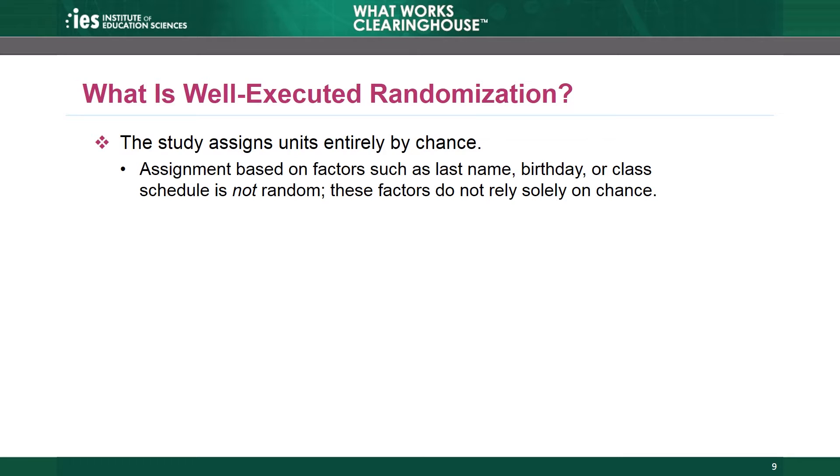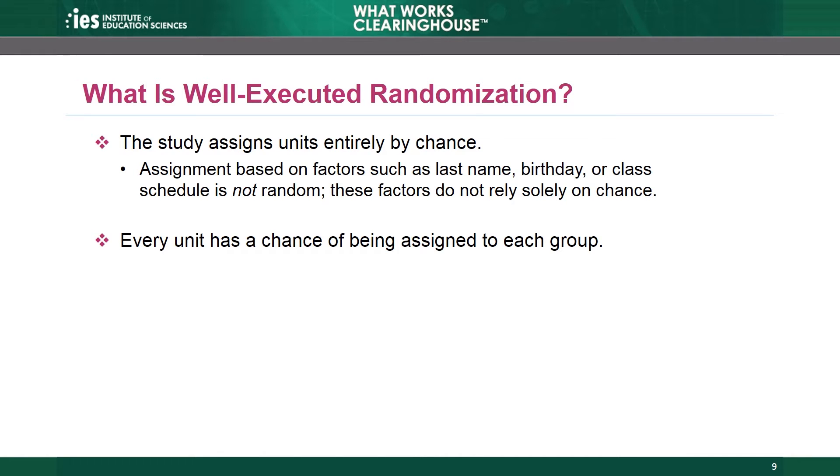Studies must also meet a second key criterion: every unit in the analysis must have a chance of being assigned to each group. So if a study randomizes students to three conditions, then every child must have the opportunity to be assigned to one of those groups. The study authors can't say Anita had the opportunity to be in one of three groups, but DeAndre only had the opportunity to be in one of two groups — it isn't well-executed randomization if DeAndre didn't have the possibility of ending up in the third group.